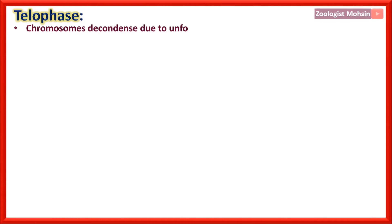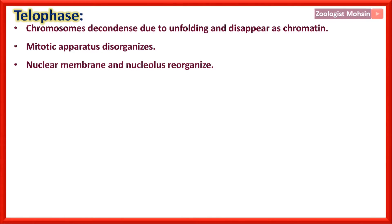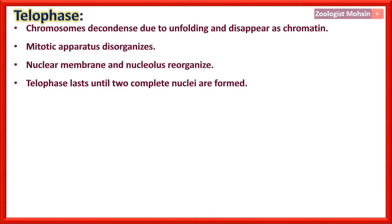Telophase: Chromosomes decondense due to unfolding and disappear as chromatin. The mitotic apparatus disorganizes, and the nuclear membrane and nucleolus reorganize. Telophase lasts until two complete nuclei are formed.